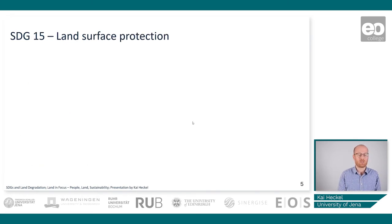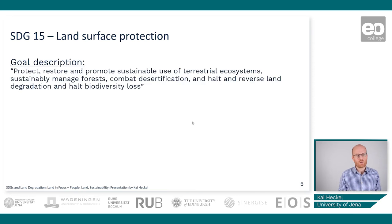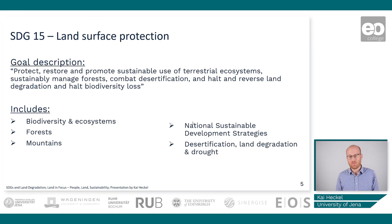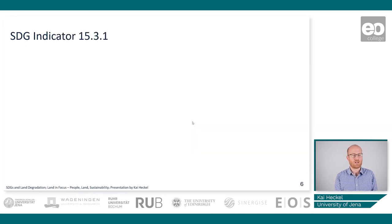SDG 15 focuses on land surface protection and is the SDG we will work on in more detail in this tutorial. The overarching goal is to protect, restore, and promote sustainable use of terrestrial ecosystems, sustainably manage forests, combat desertification, and halt and reverse land degradation and biodiversity loss. The main topics included in this SDG are biodiversity, ecosystems, forests, mountains, desertification, land degradation, and drought. This tutorial will focus specifically on the land degradation component.